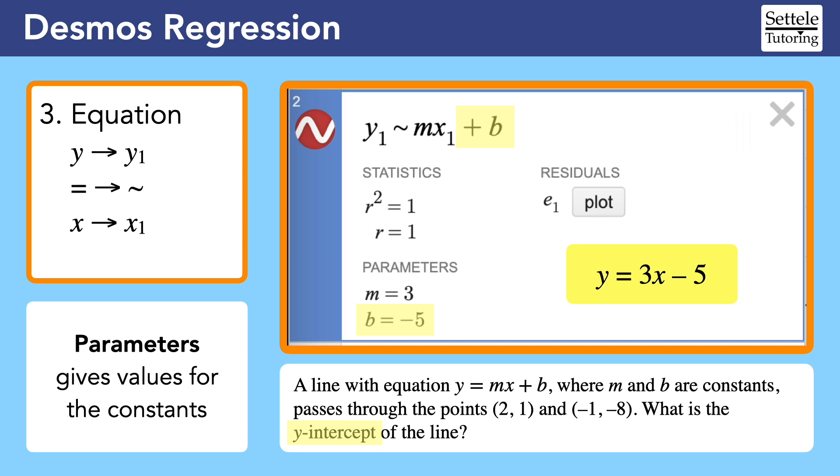We could have found this equation manually without a regression or Desmos by using the slope formula to find m and then plugging points into equations to find the value of b. In this case, the manual solution might actually be faster than creating a regression in Desmos.